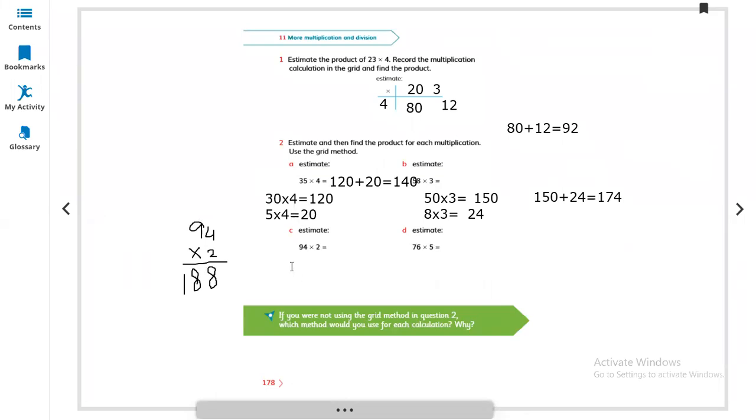Let us check using the other method: 90 multiplied by 2 and 4 multiplied by 2. 90 multiplied by 2 is 180 and 4 multiplied by 2 equals 8. So 180 plus 8 equals 188.